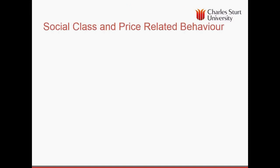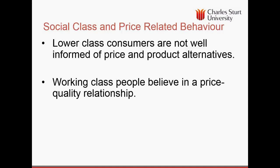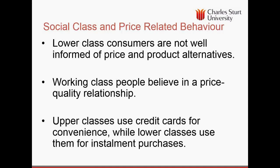There are also differences in the way these classes view price. Lower class customers are not well informed of price because they are brand loyal and unaware of product alternatives. Working class people believe strongly in a price–quality relationship. Upper classes use credit cards for convenience, while lower classes use them for instalment purchases — a major difference in price behaviour and credit behaviour across social classes.